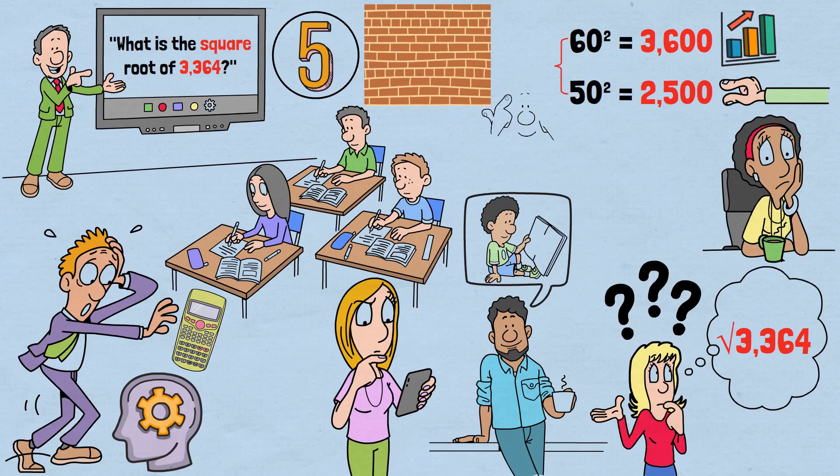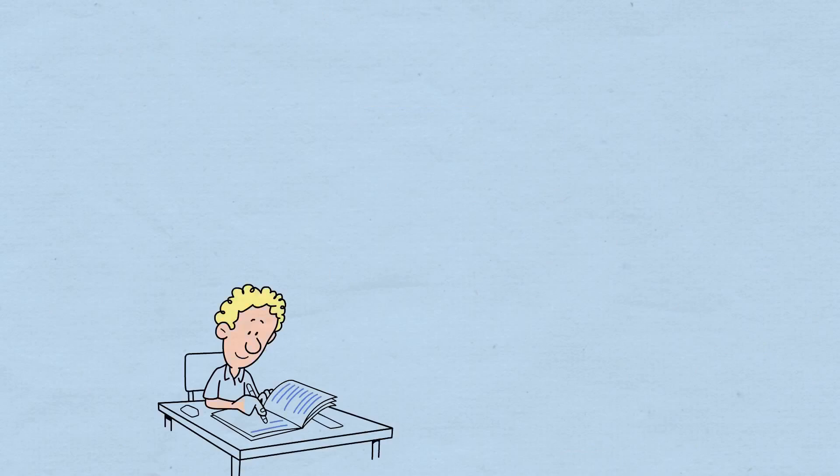The key to this entire method rests on a deceptively simple observation that most people have seen thousands of times but never truly noticed. Let's start by examining something you've known since childhood: the squares of single digits.